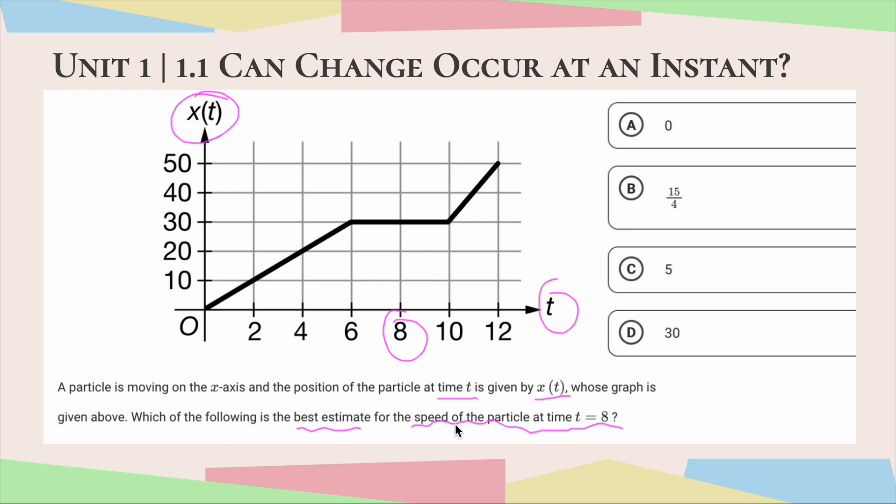So speed is basically going to be the average rate of change of the position with relation to time. So said in a different way, when we're looking at this graph, what we want to look for is the average rate of change, which is really just a representation of the slope.